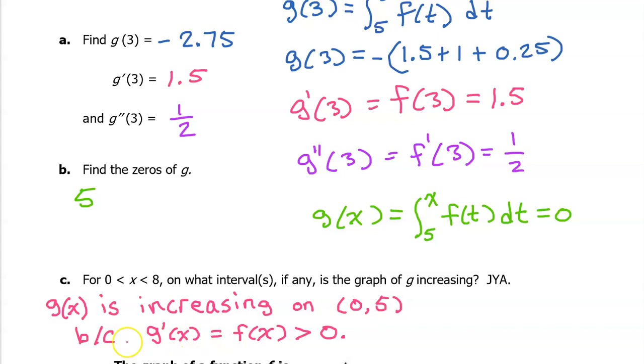Notice the way I'm saying this. You want to mention g prime of x, because we know that g of x is increasing when g prime is greater than 0. But we also need to mention f of x, because that's the actual graph that we're given — we're not given a graph of g. So say it just like this: because g prime of x, which equals f of x, is positive.